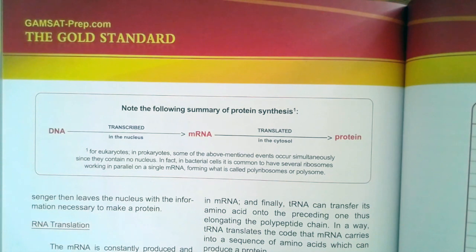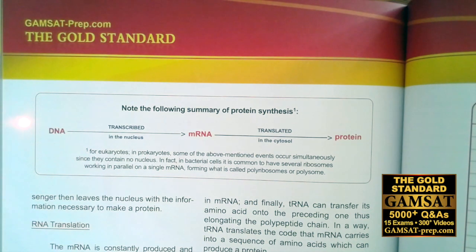Here is the so-called central dogma in biology, and that is that DNA is transcribed in the nucleus, this is for eukaryotes of course, into messenger RNA.